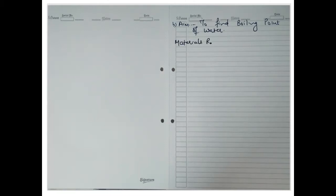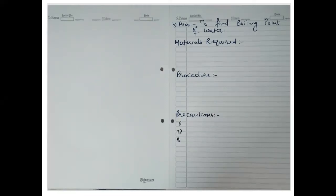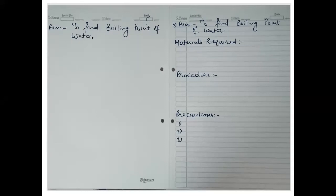Then write materials required, then procedure, then precautions. On the left-hand side with pencil, write the date, then aim: to find the boiling point of water. Then materials required, then diagram, then result.